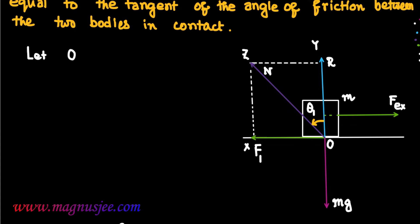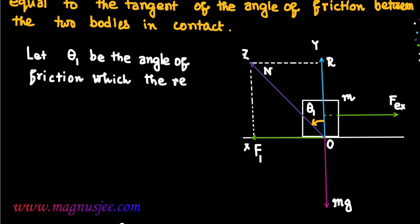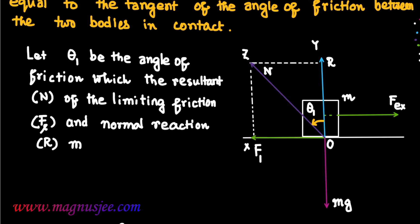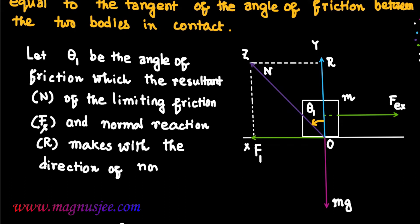Let theta L be the angle of friction — the angle which the resultant force N, of the limiting friction FL and normal reaction R, makes with the direction of normal reaction R.